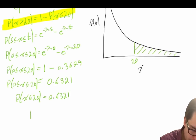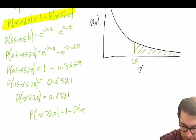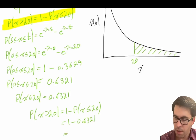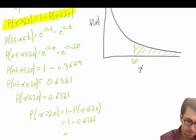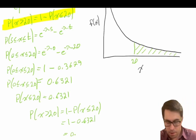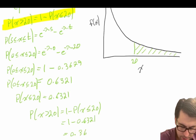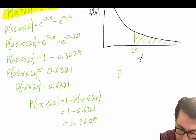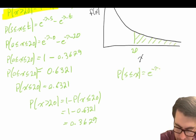So the probability that x is greater than 20 equals 1 minus the probability that x is less than or equal to 20. We found that probability to be 0.6321, so 1 minus 0.6321 equals 0.3679. That's one way to answer the question.